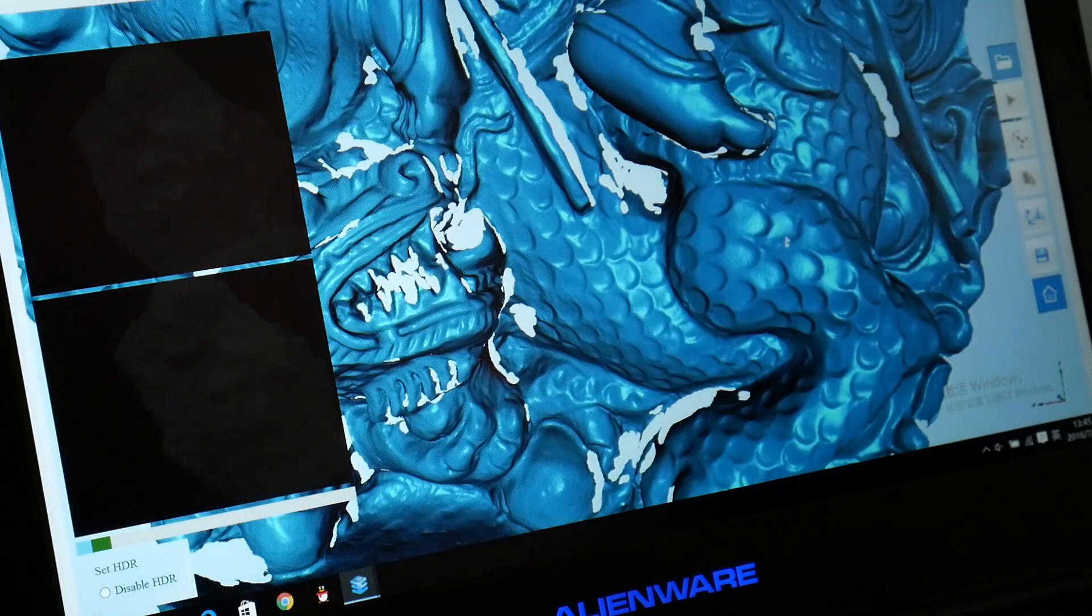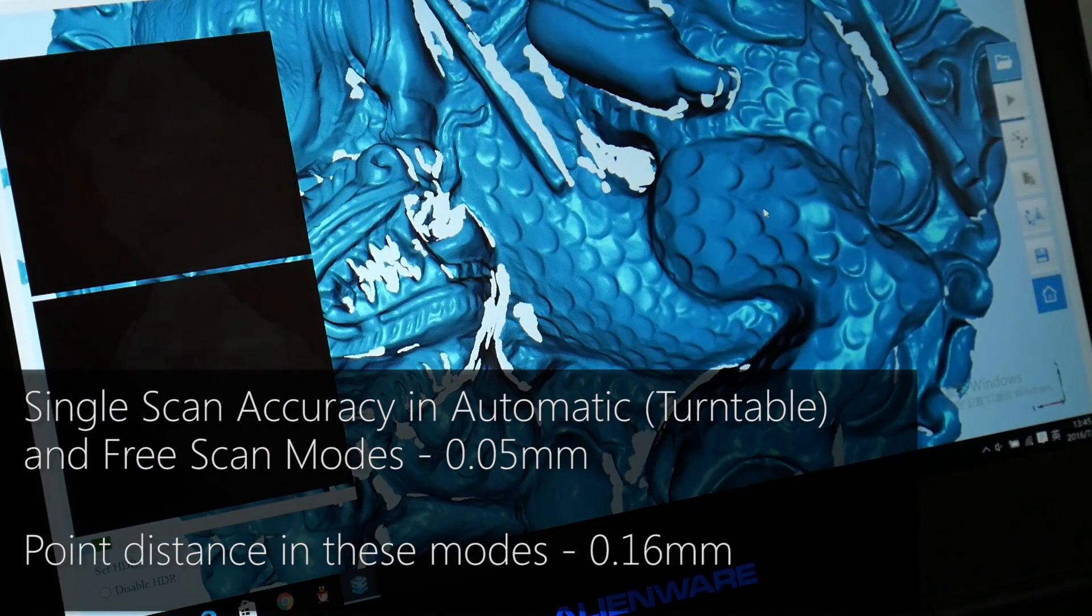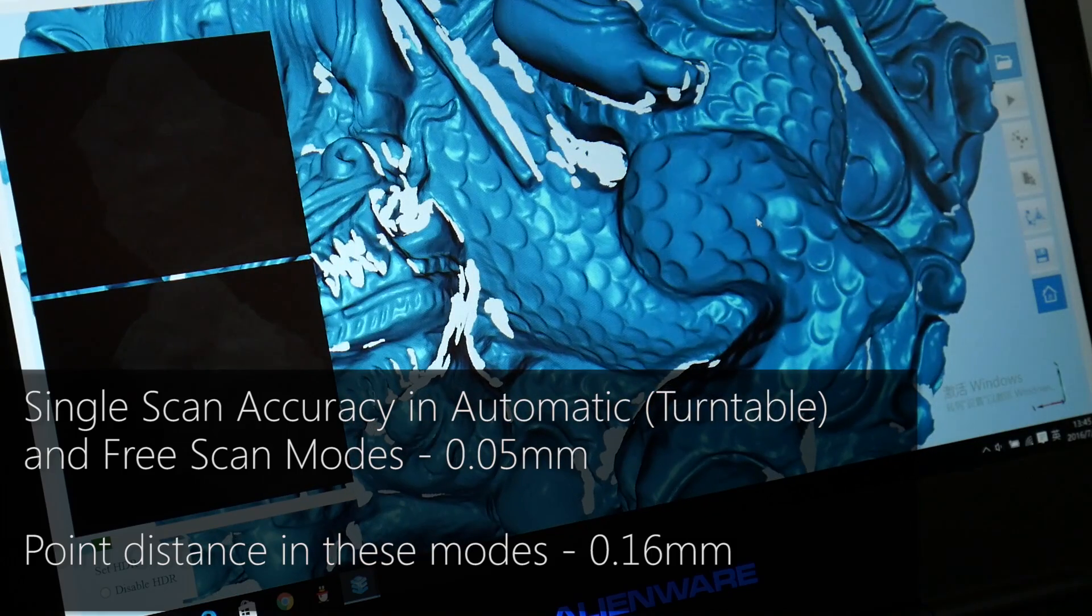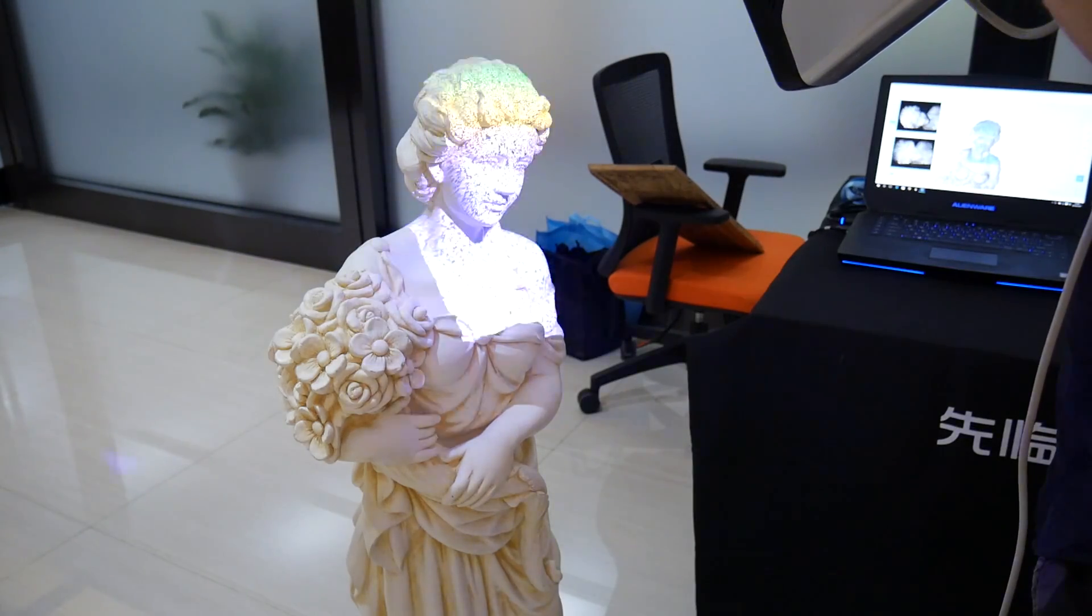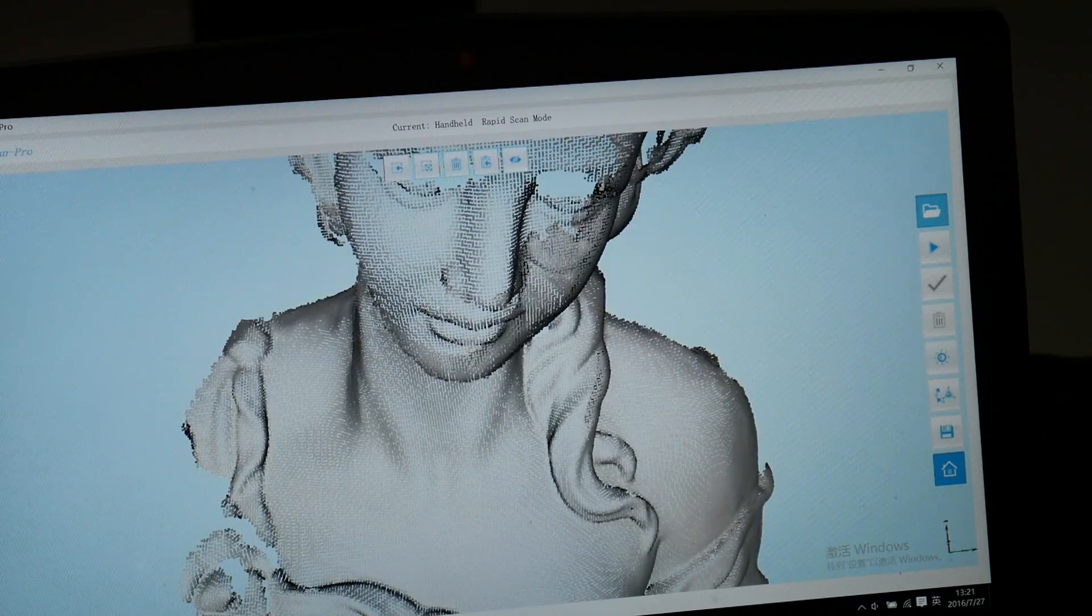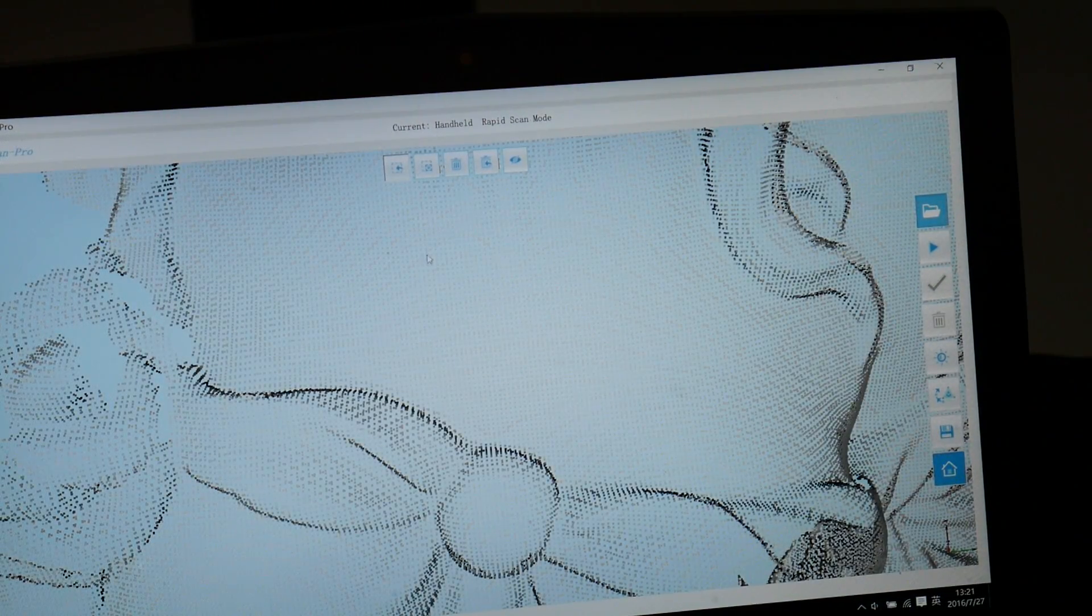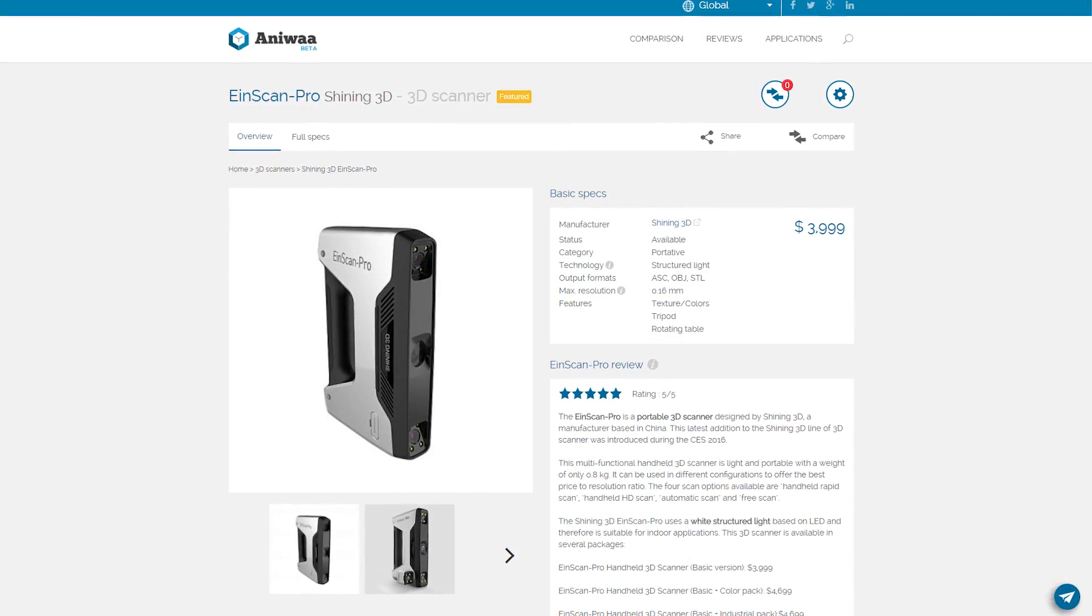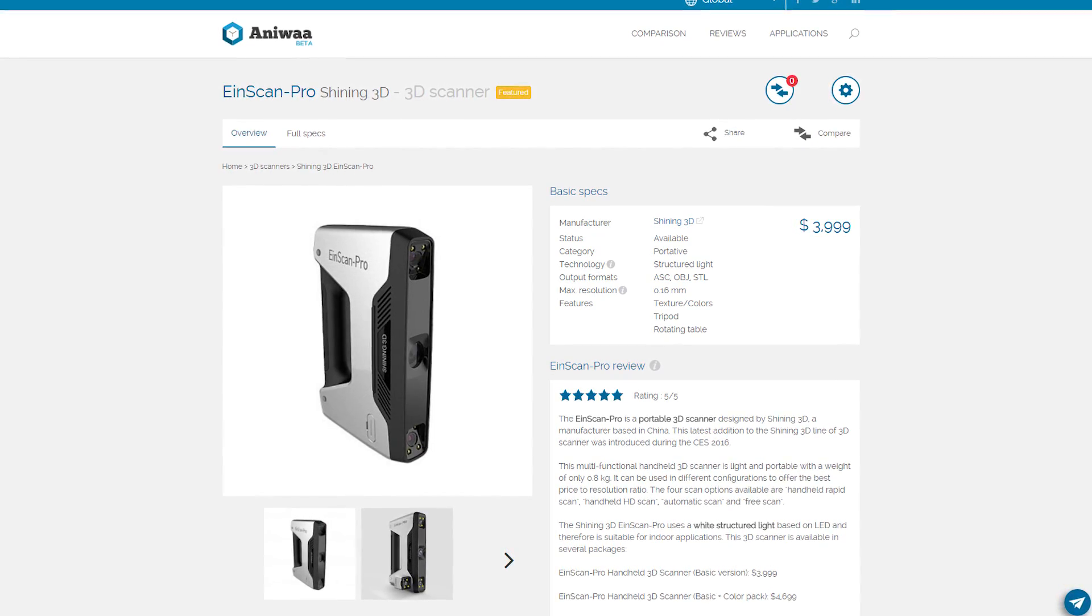In terms of accuracy, the 3D scanner can go down to 0.05 millimeters, which is phenomenal for a scanner at this price point. It can also do handheld rapid scan with an accuracy of 0.3 millimeters, which is still nothing to sniff at when looking at other scanners in the market at this price point. That's pretty impressive.